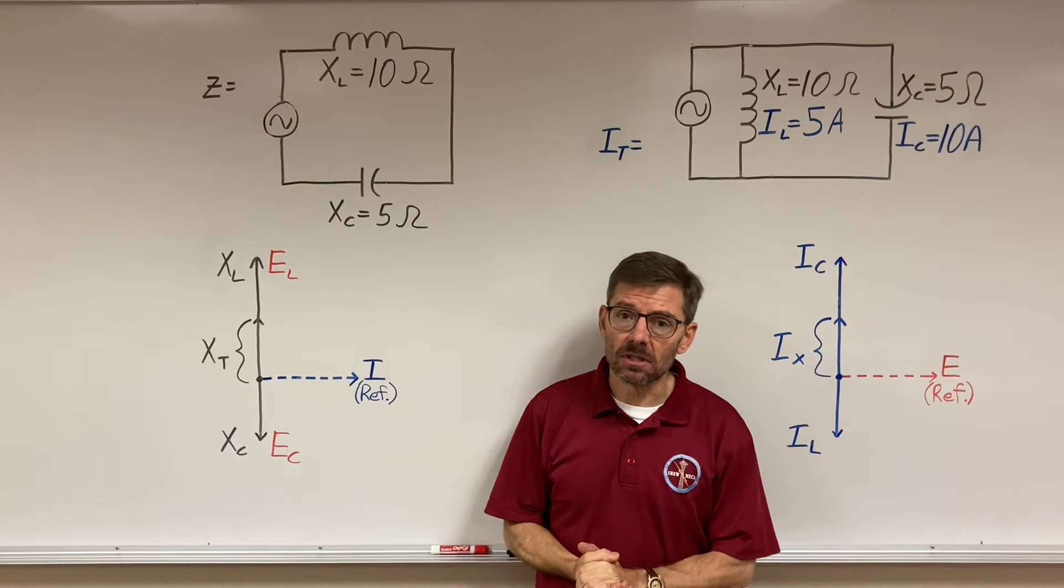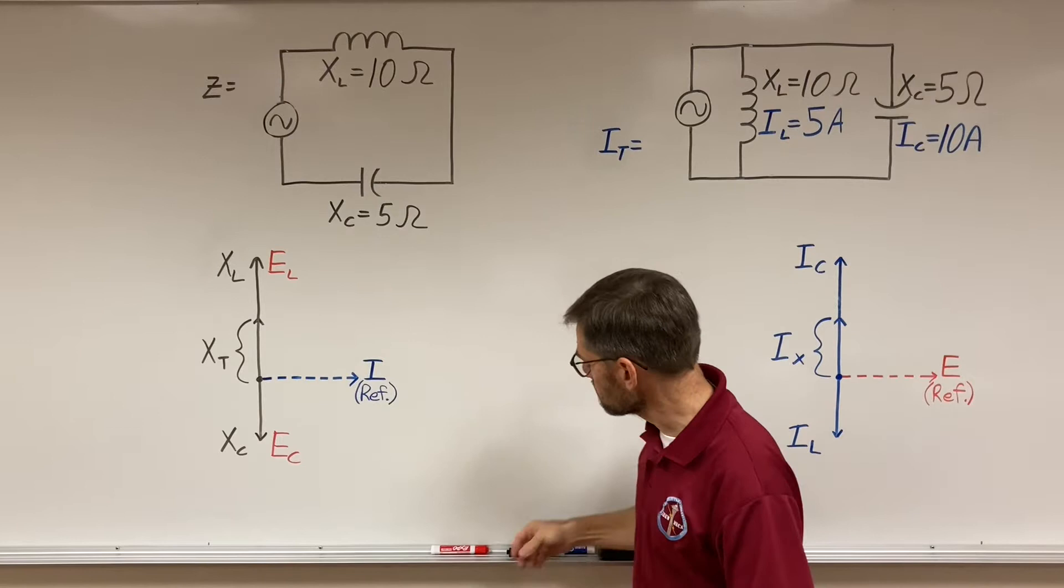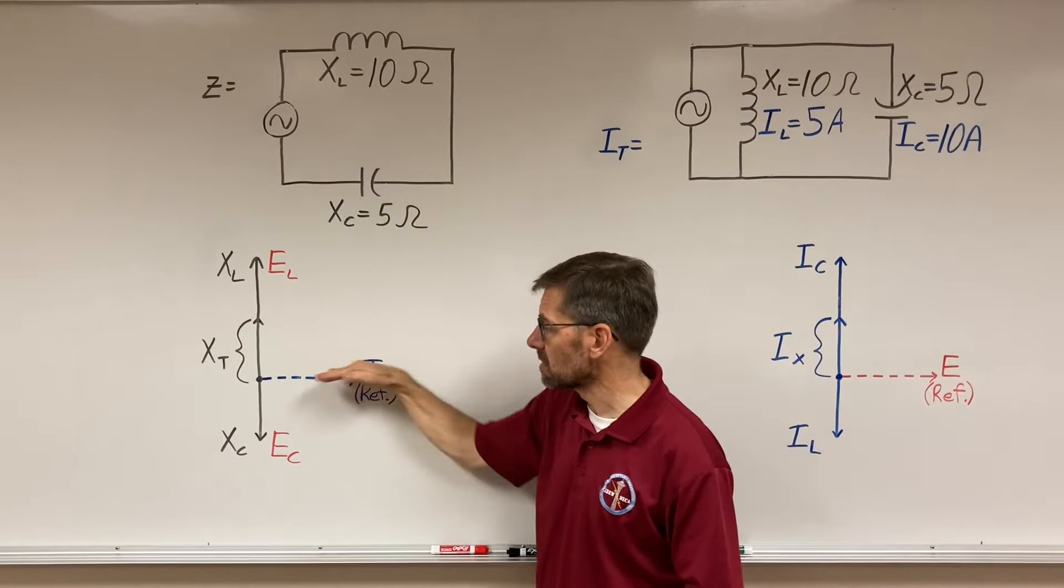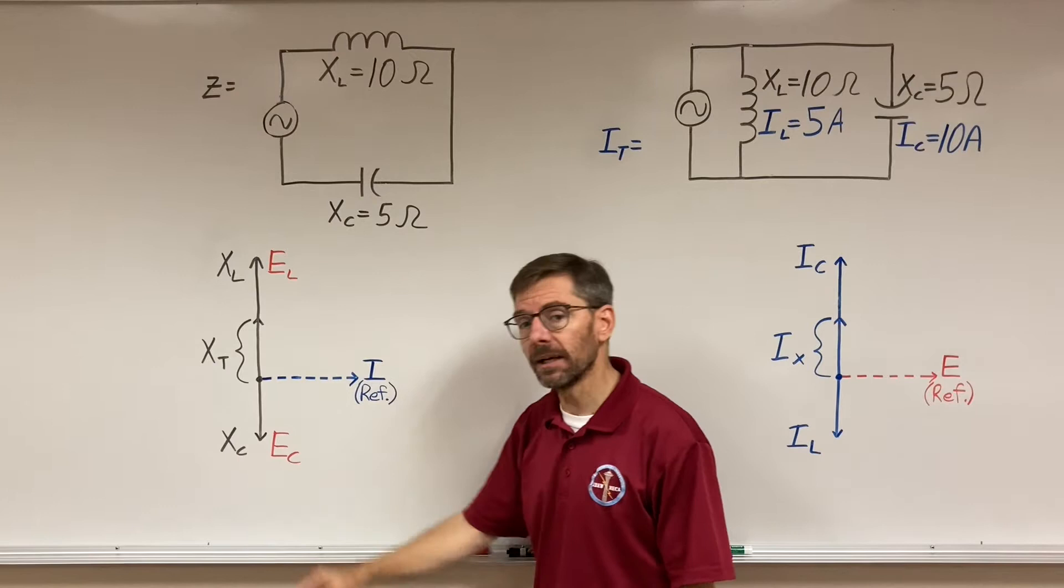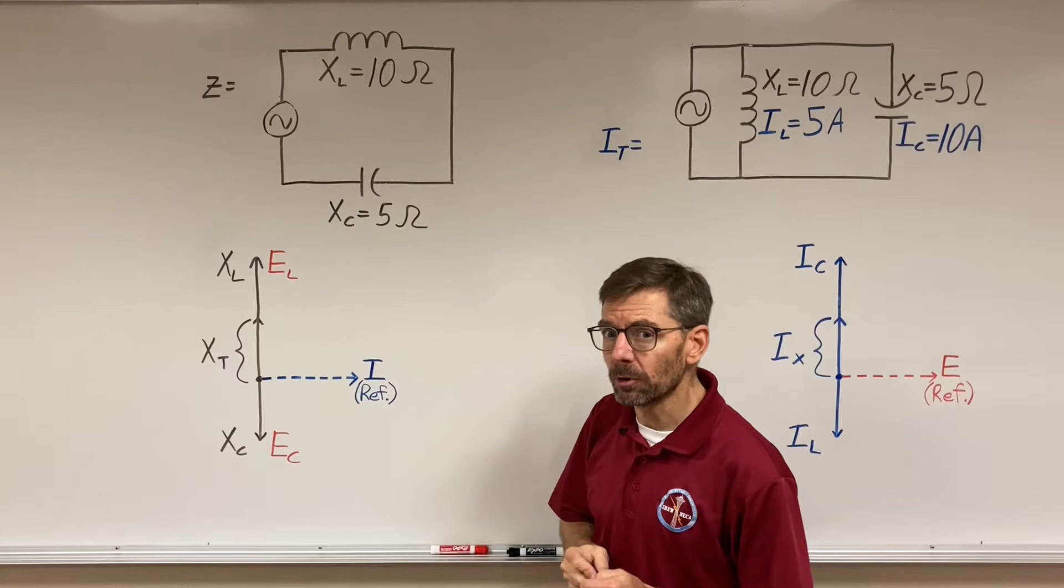And I also drew some vectors. Let's start with the vectors because it really establishes the main point I'm trying to get across. Okay, series circuit current is my reference. So what do we know about the voltage drop on the inductor? It leads by 90 degrees, and the capacitor lags by 90 degrees. And we use Eli, the ice man, to help us remember that.